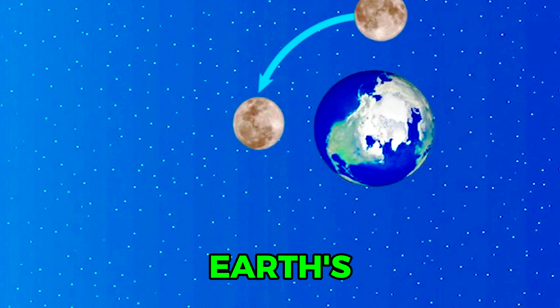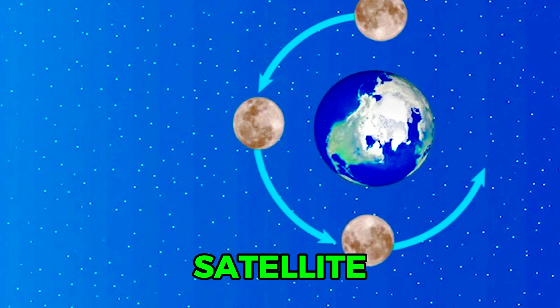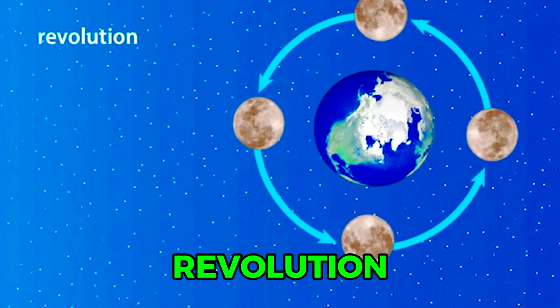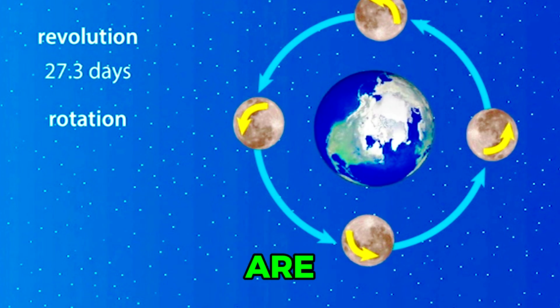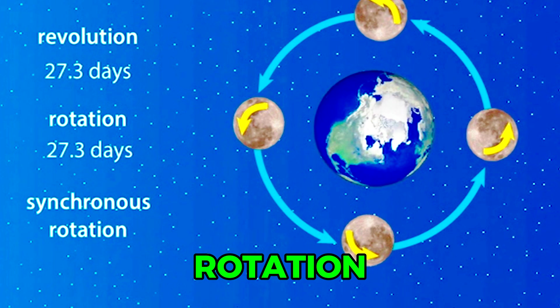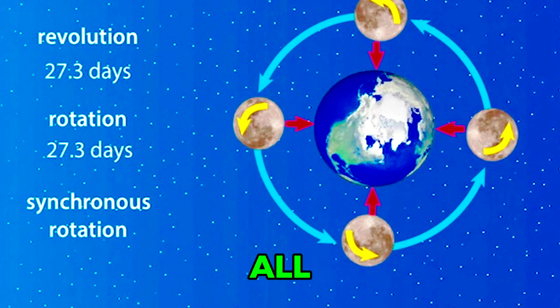The Moon is Earth's only natural satellite, making one complete revolution every 27.3 days. The Moon's rotation and revolution periods are the same, which is called synchronous rotation. This means that the same side of the Moon faces the Earth at all times.